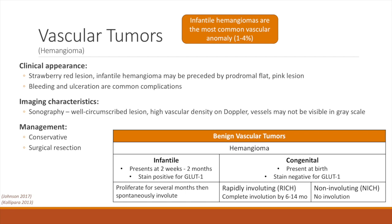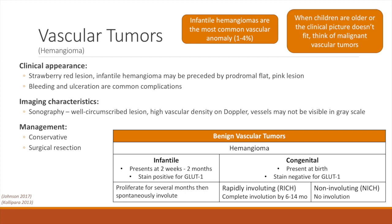Ultrasound is the first line imaging for hemangiomas if the diagnosis is unclear. The findings on ultrasound would show a well-circumscribed lesion with high vascular density, although the vessels may not be apparent without color Doppler. Usually no treatment is required for these lesions, as most will involute spontaneously. In some severe cases that do not spontaneously resolve and are disfiguring, surgical resection may be required. Because there are rare malignant vascular tumors that may occur in children, it is important to keep these other diagnoses in mind if the child is older or if the clinical story does not fit the typical clinical picture for hemangioma.